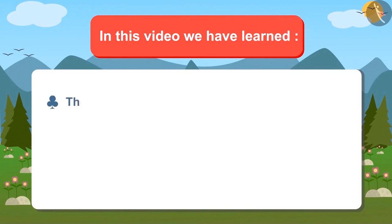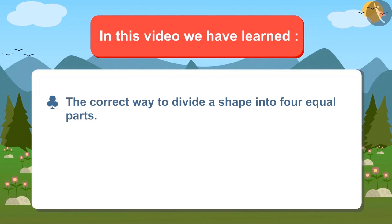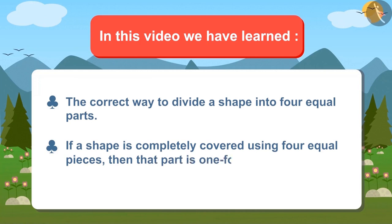Today we have learnt what is the correct way to divide a shape into four equal parts. And if a shape is completely covered using four equal pieces, then that part is one-fourth of that whole figure.